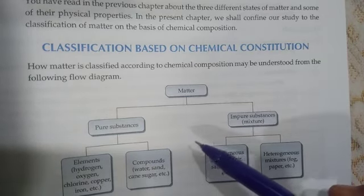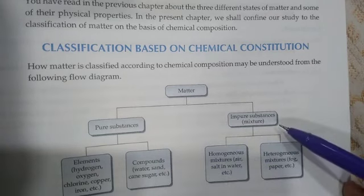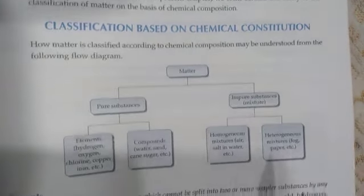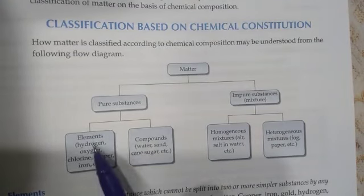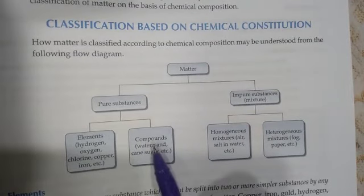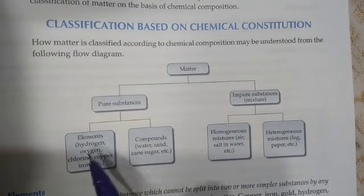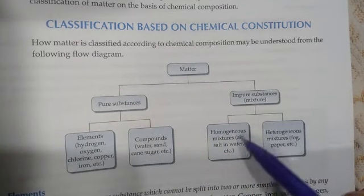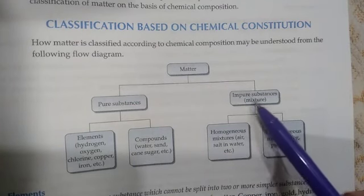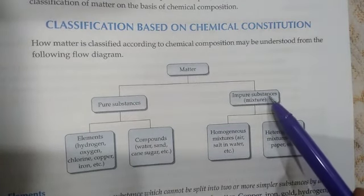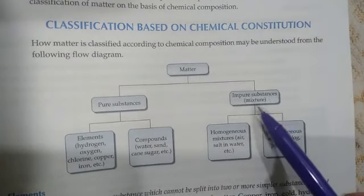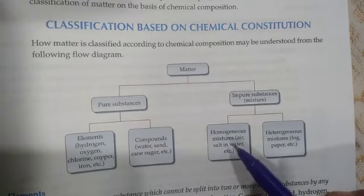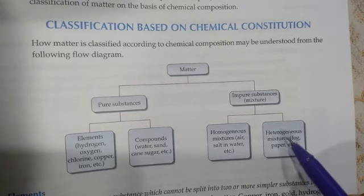Impure substances contain molecules of different types — those are impure substances. The examples of pure substances are element and compound, while impure substances are mixtures. There are two types of mixtures: homogeneous mixtures and heterogeneous mixtures.